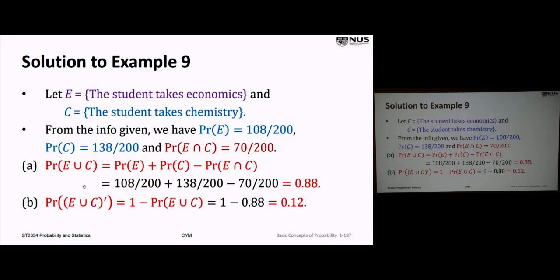Part B: the probability the student doesn't take either subject — the complement of E union C. We know that the probability of a complement is 1 minus the probability itself. So this is 1 minus 0.88, which equals 0.12.